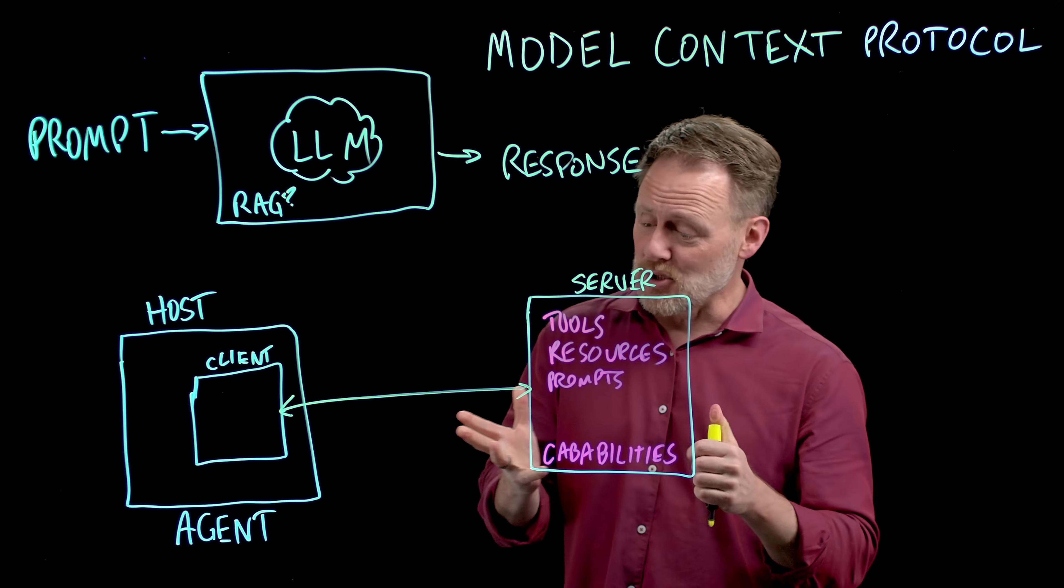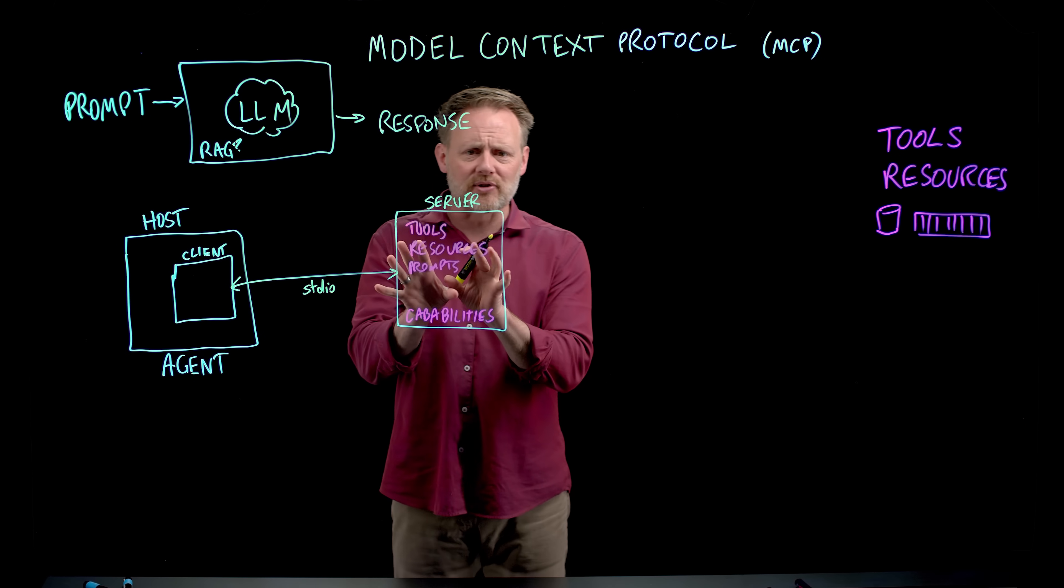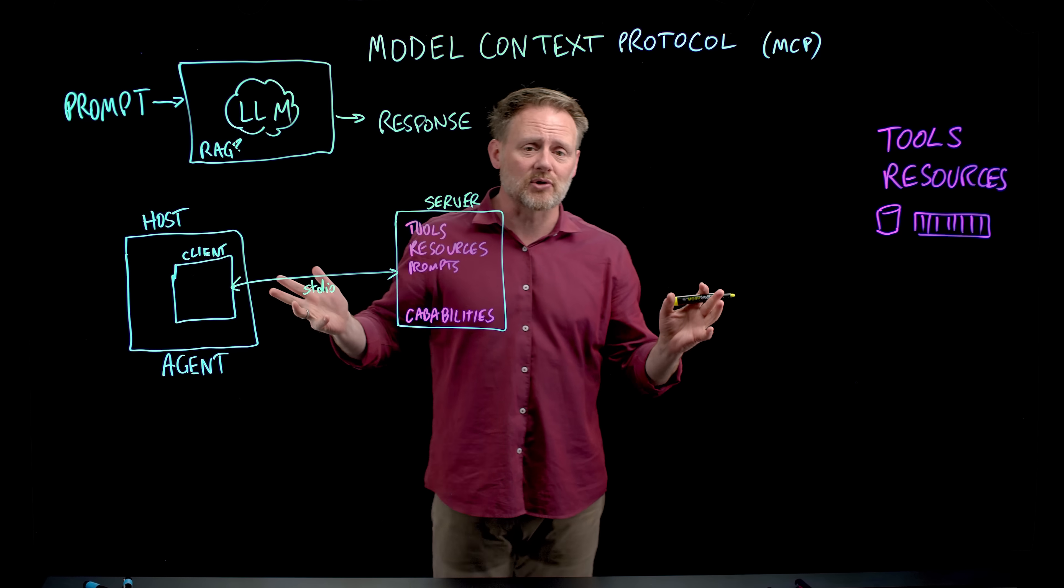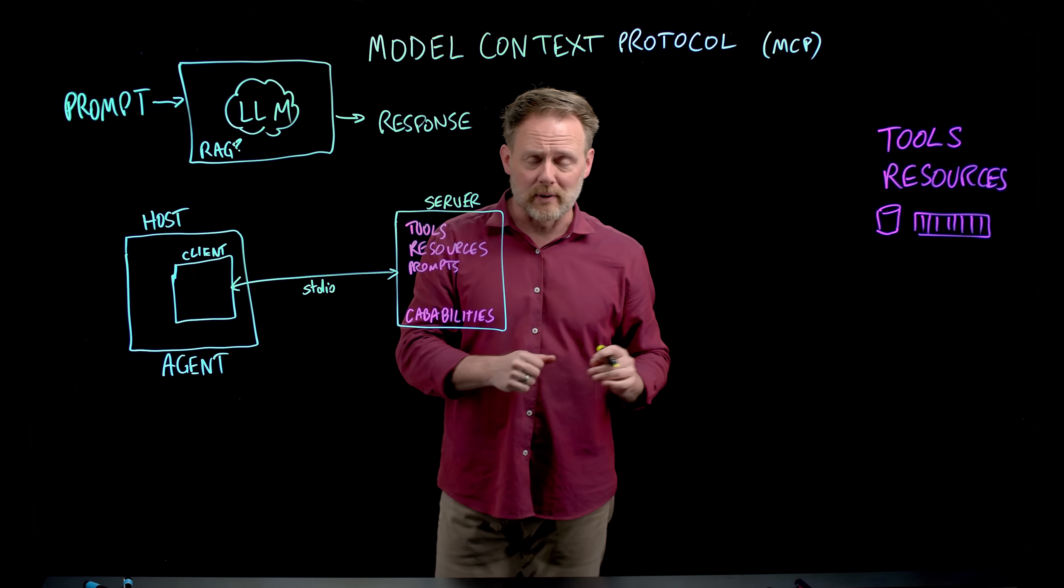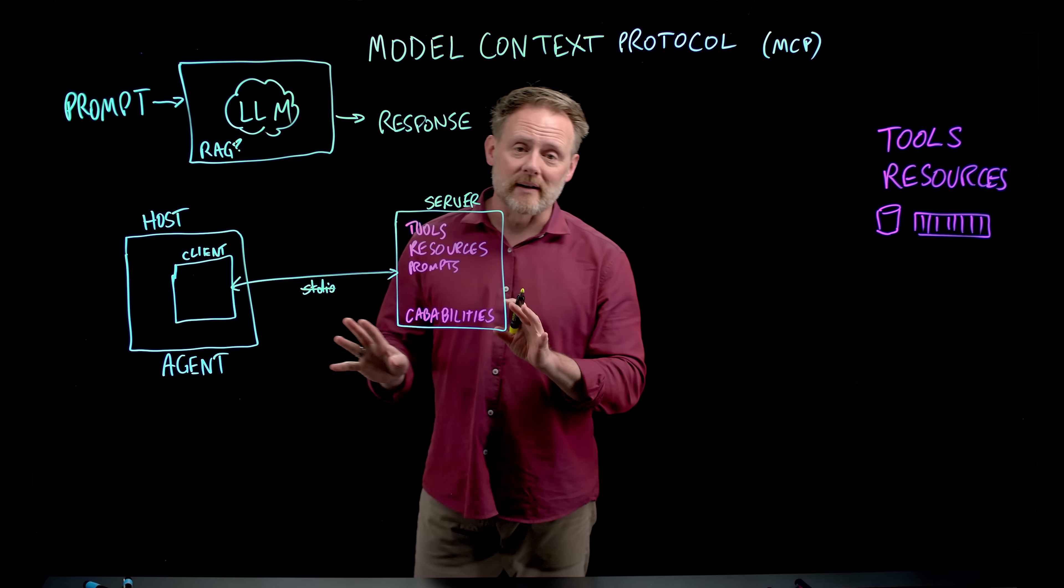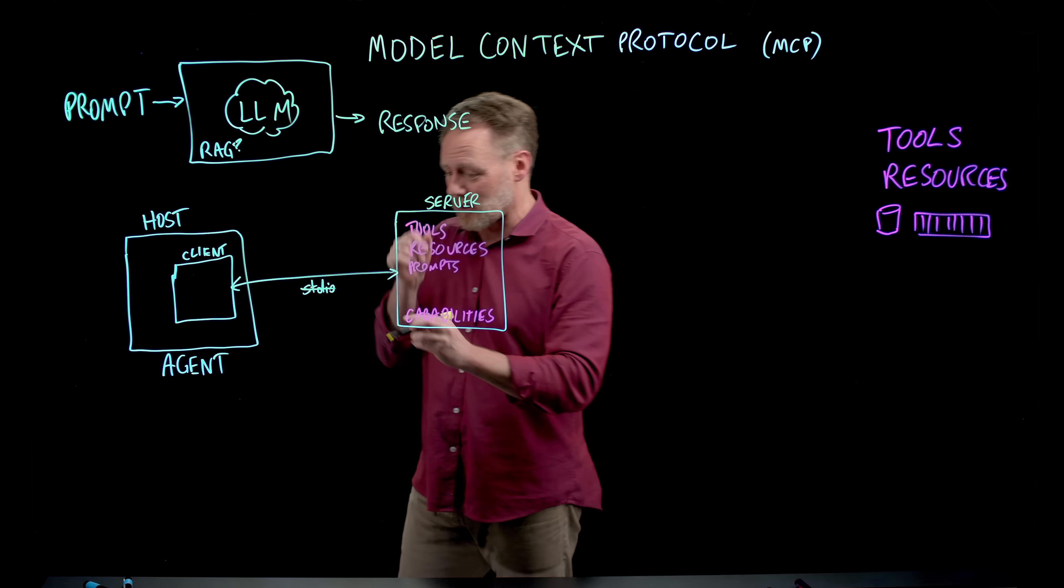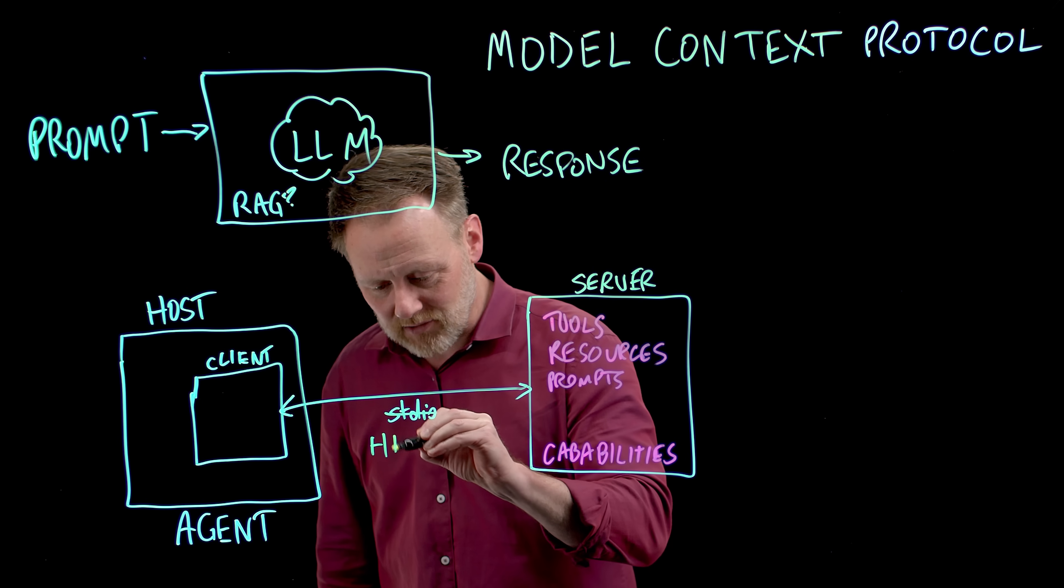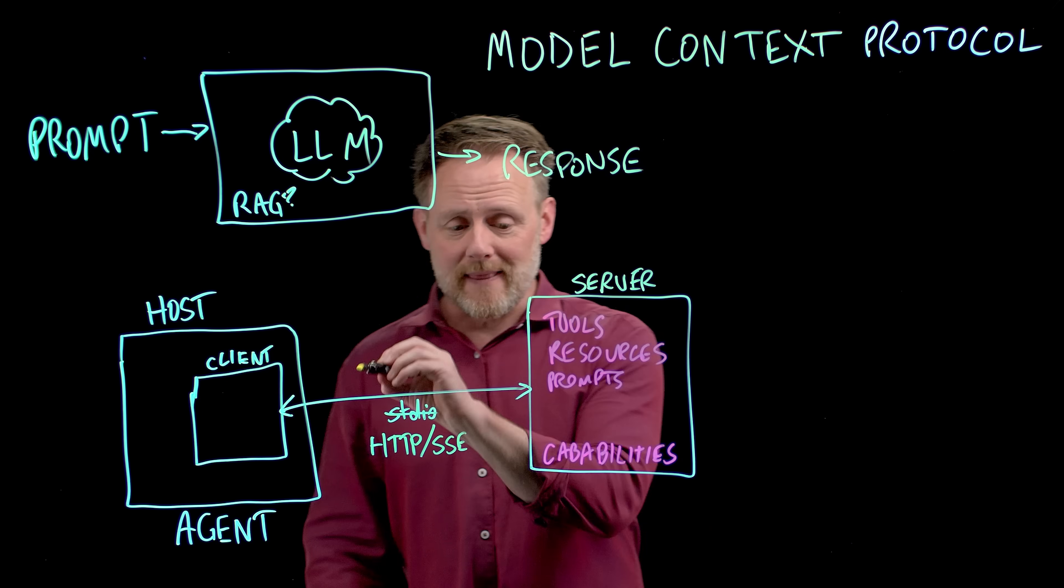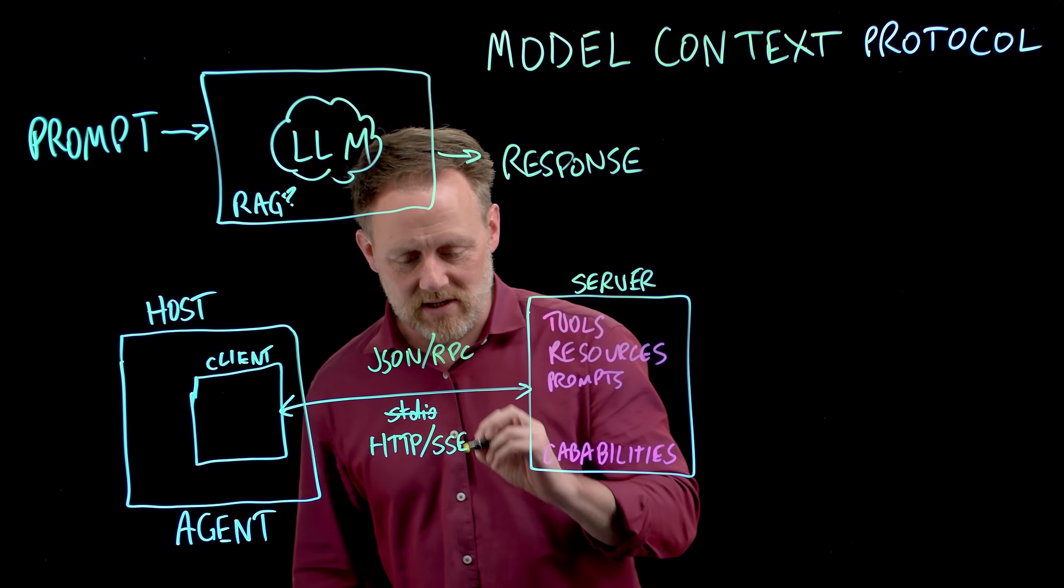The connection between these two things, between client and server, can be two things. It can be, interestingly, standard I/O. So if this is a process running locally on my laptop, and I've got some LLM host application, like say Claude Desktop or something, that's something that shows up in a lot of the examples. They can just communicate via pipes and standard I/O. We don't want that. That's not kind of what we're interested in. So we also have, as an option, HTTP and server-sent events, and the messages being exchanged here are going to be in JSON RPC.